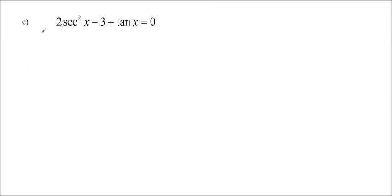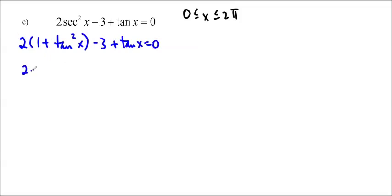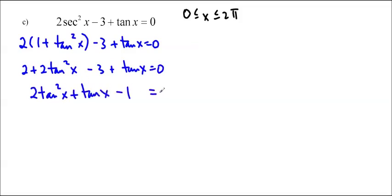So this next one, it looks a little bit weird. I'm just going to add the restriction again. So 0 ≤ x ≤ 2π. So because I don't have the same ratio, I am going to have to change it so that I get to the same ratio. So sec²x, I happen to know, is 1 + tan²x. So I'm going to replace that there. Equals 0. And now I can just do 2 + 2tan²x - 3 + tan x. And I'm going to put it into standard form because that's easiest for me. tan x - 1 equals 0.